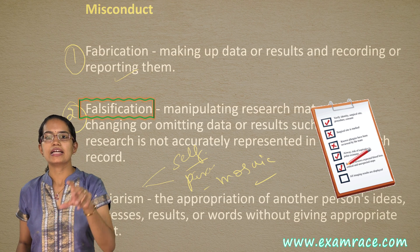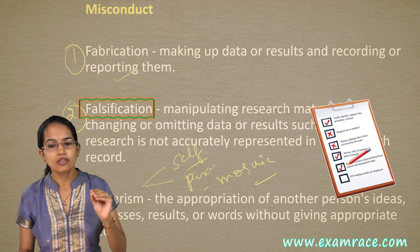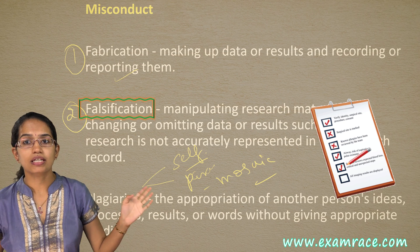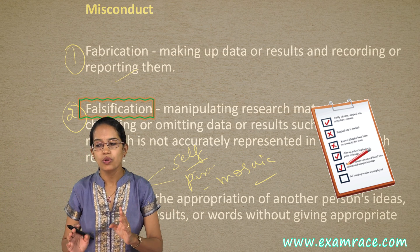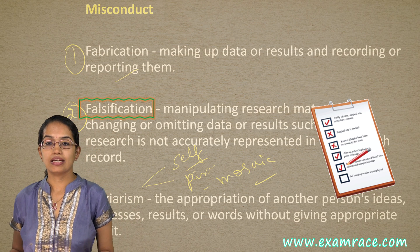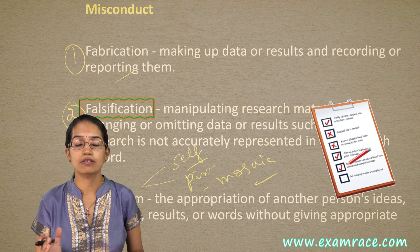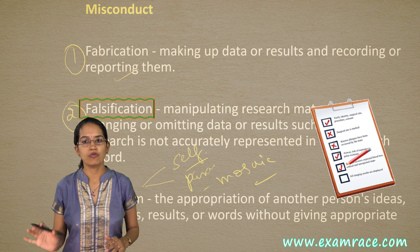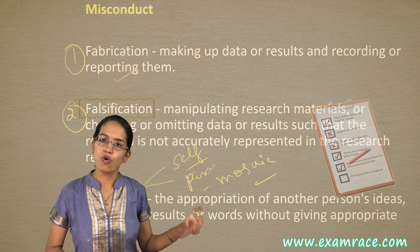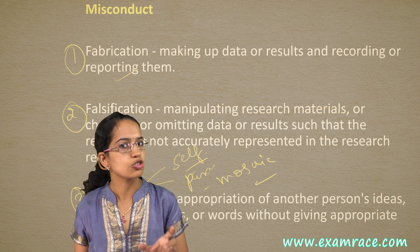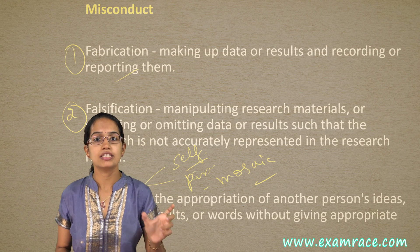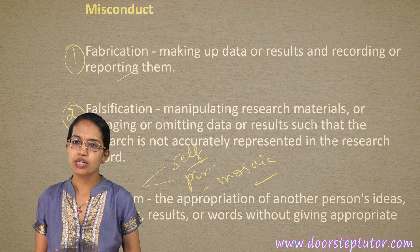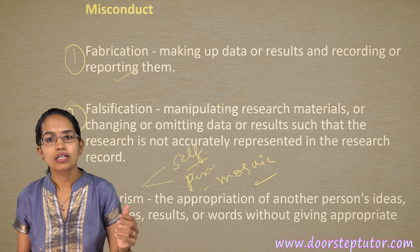In falsification, you are manipulating whatever information is going in to bring about the desired result. You could omit certain information, change the data, manipulate the facts, or remove certain information in order to prove something by any means. That is falsification. So if there is falsification in research, it is not ethical research. If there is fabrication, it is not ethical research, and plagiarism is of course not an ethical part of the research process.